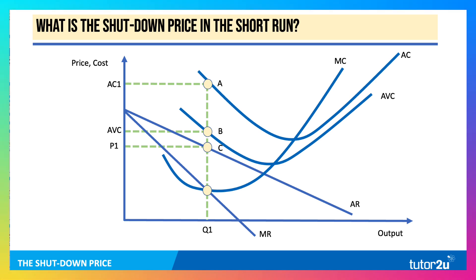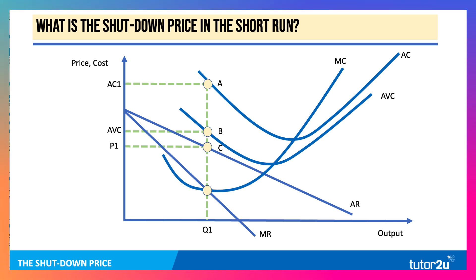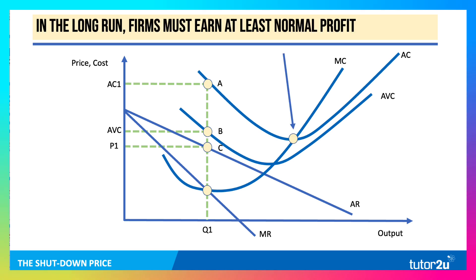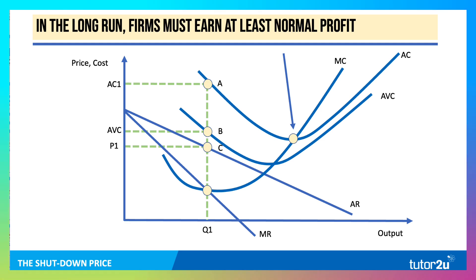They don't always shut down — it depends on whether the price is artificially low, perhaps due to a recession, and whether firms have sufficient profits to sustain losses in the short run. In the long run, firms must make at least a normal profit. We build the opportunity cost of capital into the average cost curve, so in the long run firms need to cover all their costs.